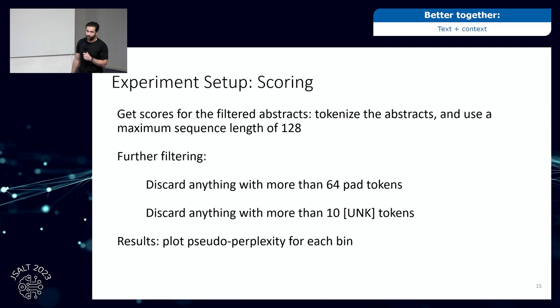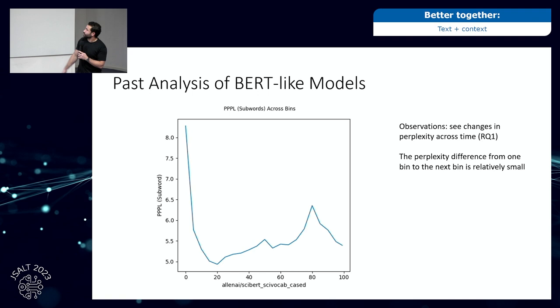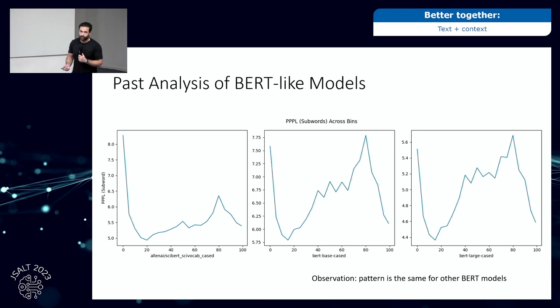We tokenized filtered abstracts using a maximum sequence length of 128 subword tokens, discarding anything with more than 64 pad tokens and more than 10 unknown tokens. The results are a pseudo-perplexity plot for each bin showing how scores change across time. For SciiBERT, there are clear changes in perplexity across time: a huge spike in earlier bins, decreasing rapidly around bin 20, rising steadily to a peak around bin 80. Perplexity is relatively smooth locally — the difference from one bin to the next is small and can likely be predicted.